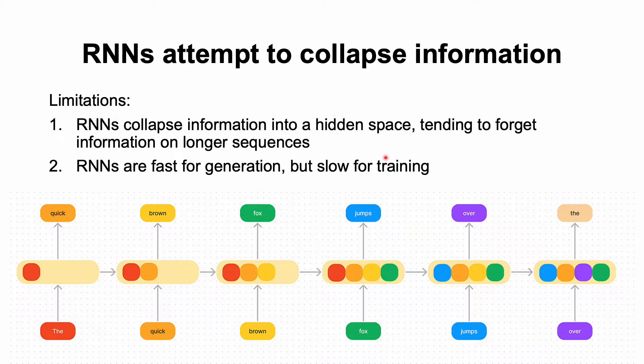RNNs are also typically slow for training, because you have to sequentially process the inputs to get the next output and then compute all the gradients all the way back through. RNNs also suffer from vanishing gradients. As you propagate the gradient updates through backpropagation, the values can either explode or go to zero.